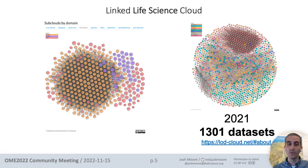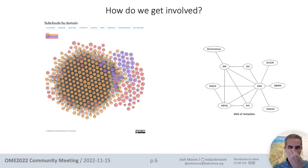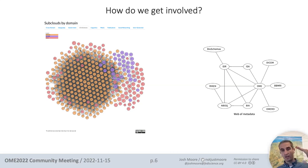Wikidata is just one linked open data set, part of the grander linked open data cloud. As of last year there were over 1300 data sets, with each link between data sets representing two data sets agreeing to reference each other. The life science subset of this cloud includes resources like UniProt and PubChem - certainly things we use in the IDR. The question we're asking is: what do we need to do with our metadata to become part of this cloud?